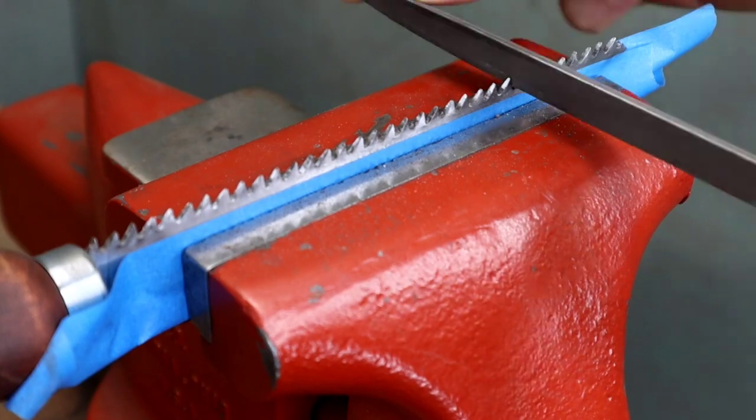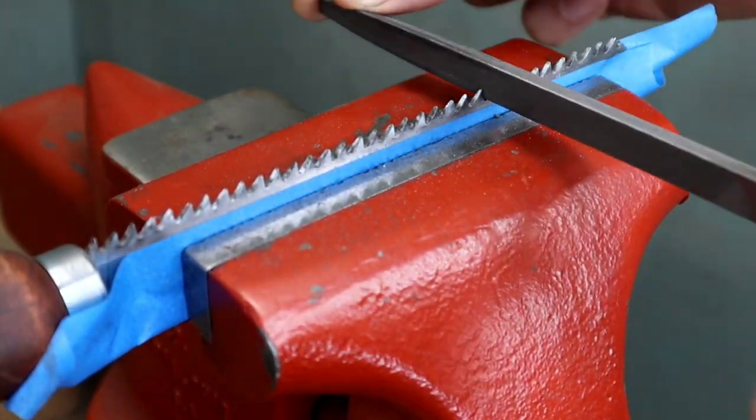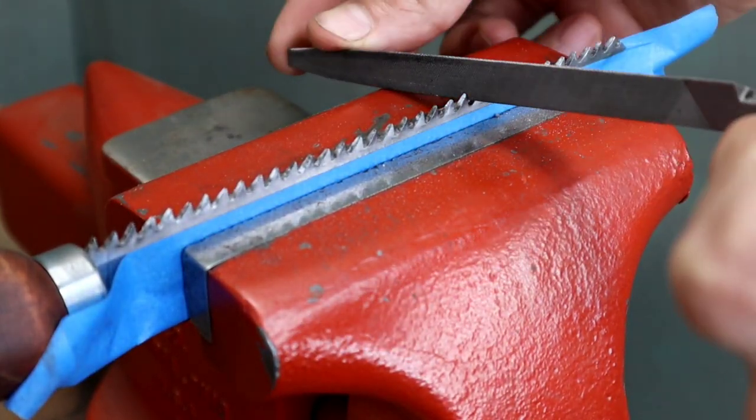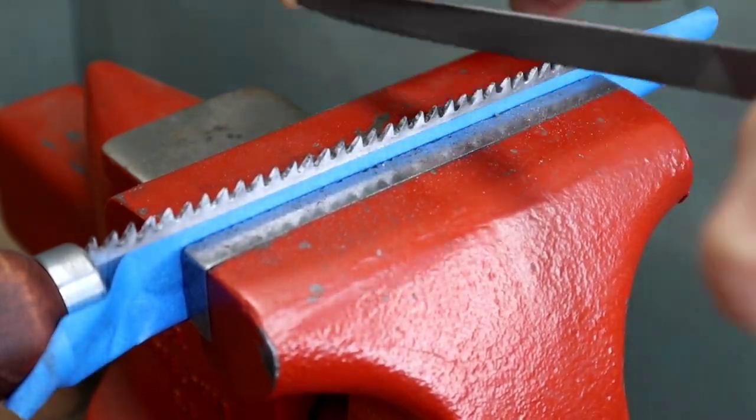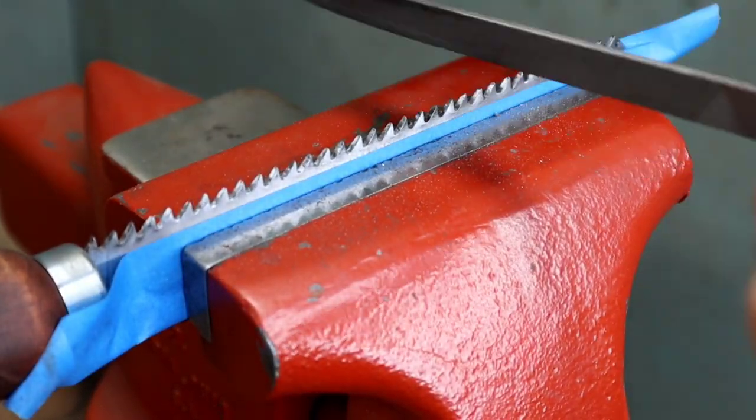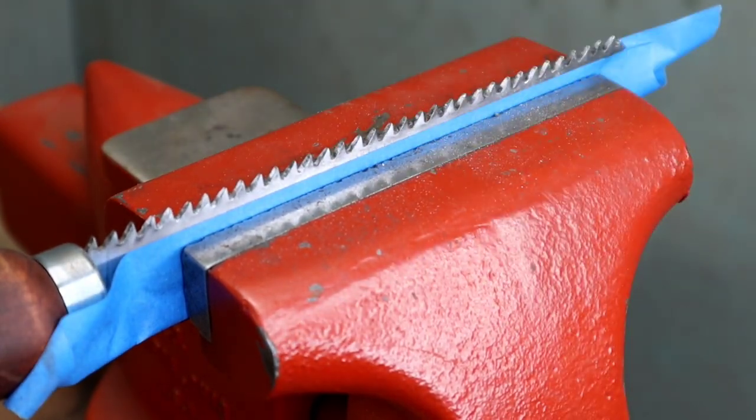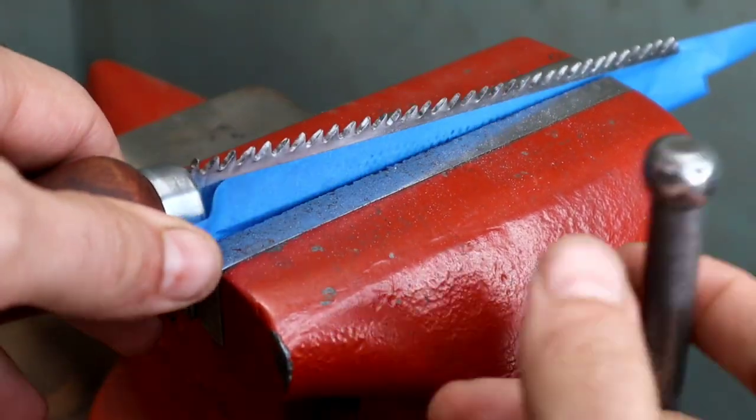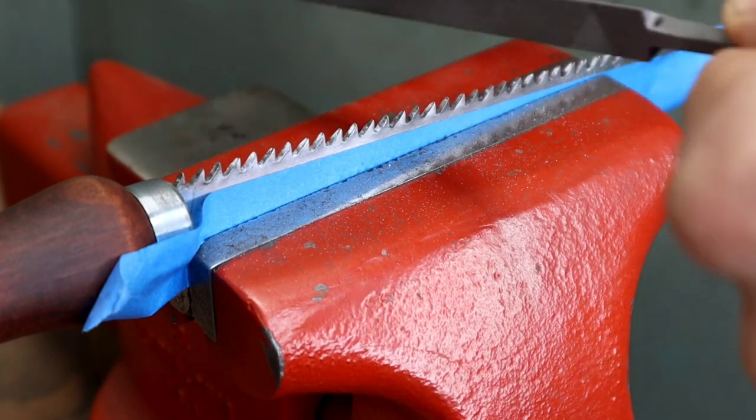In general, the closer you get to the handle, the more of an angle you want on the file, but pay attention to your blade's angles and just follow it. These finished up around 45 degrees. It's also important to remember that you want the same amount of pressure on the file the entire time, even if you're changing the angles, and keep a smooth stroke all the way across each tooth.